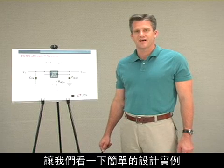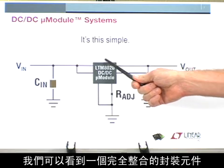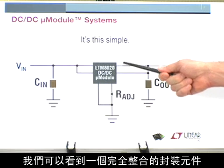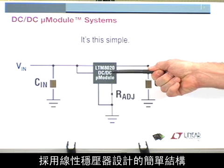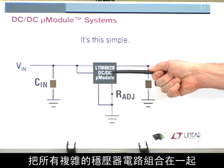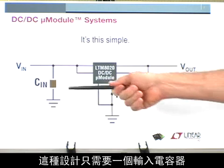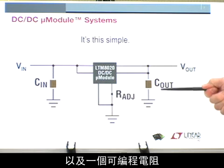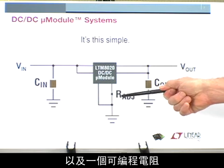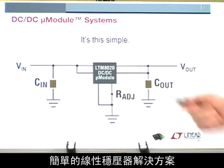Let's look at a simple design example. In this design, we can see a fully integrated package combining all of the complex regulator circuitry with the simplicity of a linear regulator design. This design requires just one input capacitor, an output capacitor, and a programming resistor — very similar to a simple linear regulator solution.